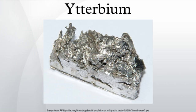In 1907, the new earth lutetia was separated from ytterbia, from which the element lutetium was extracted by Georges Urbain, Carl Auer von Welsbach, and Charles James. After some discussion, Marignac's name ytterbium was retained. A relatively pure sample of the metal was obtained only in 1953. At present, ytterbium is mainly used as a dopant of stainless steel or active laser media, and less often as a gamma-ray source.